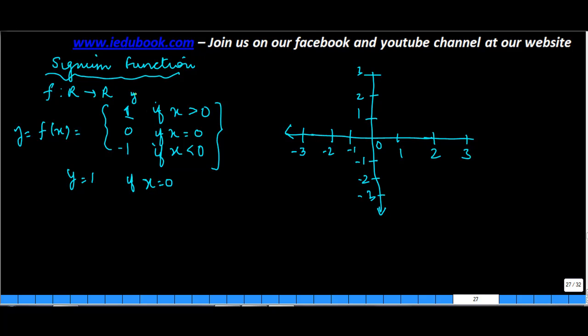Let's see how it goes. y is equal to 1 if x is greater than 0. If x is 1 then y is 1. If x is 2 then also y is 1. So you get this line where y is equal to 1.